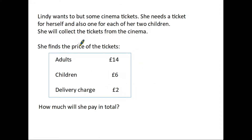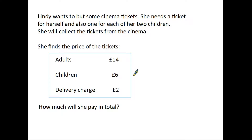Here's our first example. Lindy wants to buy some cinema tickets. She needs a ticket for herself and also one for each of her two children, and she's going to collect the tickets from the cinema. The price of the tickets: adults are £14, children are £6, and there is a delivery charge of £2. We're being asked how much she's going to pay. There is no add sign, no 'plus', no 'takeaway', no 'subtract' — you have to decide for yourself. The one clue is the word 'total'.